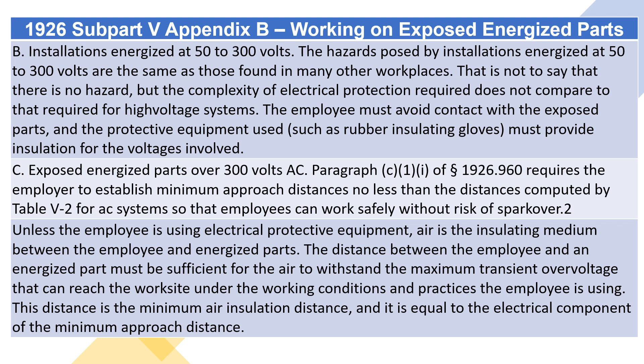The hazards posed by installations energized at 50 to 300 volts are the same as those found in many other workplaces. That is not to say that there is no hazard, but the complexity of electrical protection required does not compare to that required for high voltage systems. The employee must avoid contact with the exposed parts, and the protective equipment used, such as rubber insulating gloves, must provide insulation for the voltages involved. Paragraph C.1.I of Section 1926.960 requires the employer to establish minimum approach distances no less than the distances computed by Table V-2 for AC systems so that employees can work safely without risk of spark over.